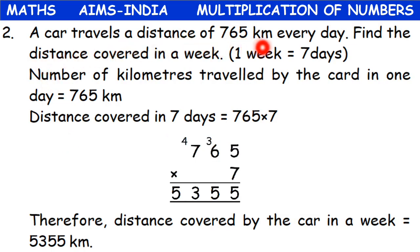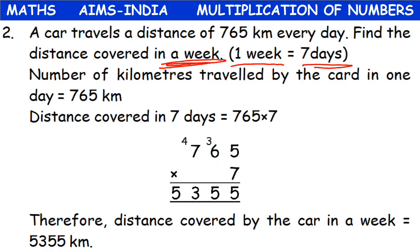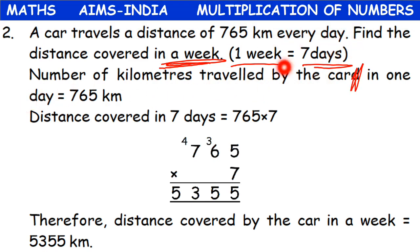Next, coming to the second word problem. A car travels a distance of 765 kilometers every day. Find the distance covered in a week. One week means 7 days. First piece of information: number of kilometers traveled by the car in one day is equal to 765 kilometers. Find the distance covered in 7 days — one week means 7 days.